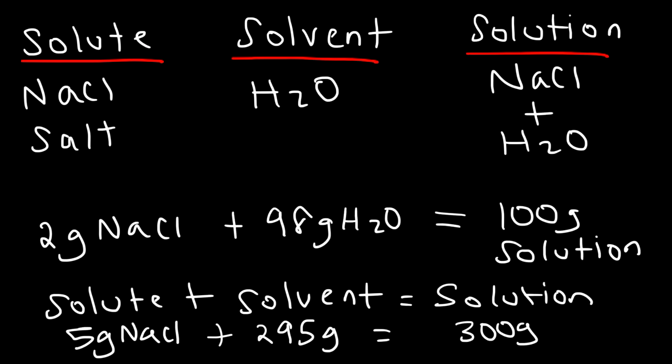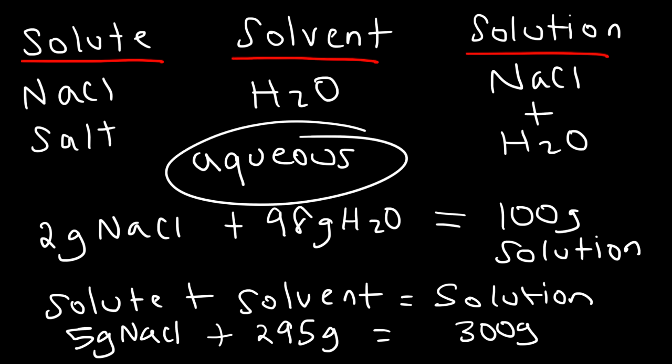You may have heard the term aqueous solution — what does aqueous mean? An aqueous solution is a solution in which the solvent is water. Sometimes the solvent could be something else — ethanol, alcohol, methanol, or many other things. But when water is the solvent, the solution is called an aqueous solution.